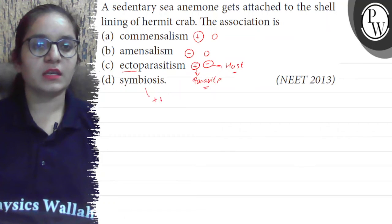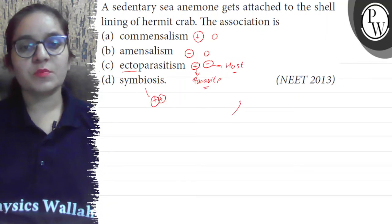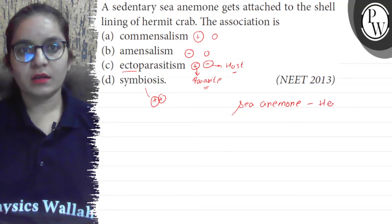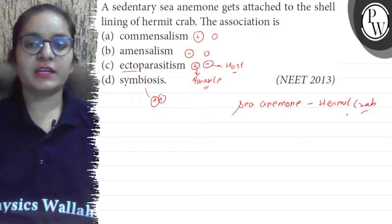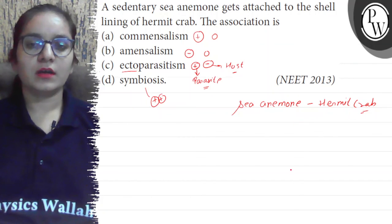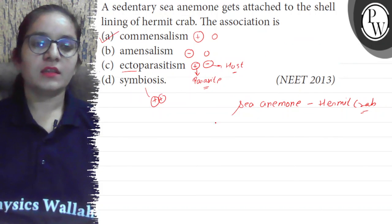Mutualism (Symbiosis) is when both are getting benefited. Now, the question asks about the relationship of the sedentary sea anemone and the hermit crab. The sea anemone gets attached to the hermit crab's shell, while the hermit crab neither gets benefited nor harmed. So the correct answer here is option A — Commensalism. Thank you.